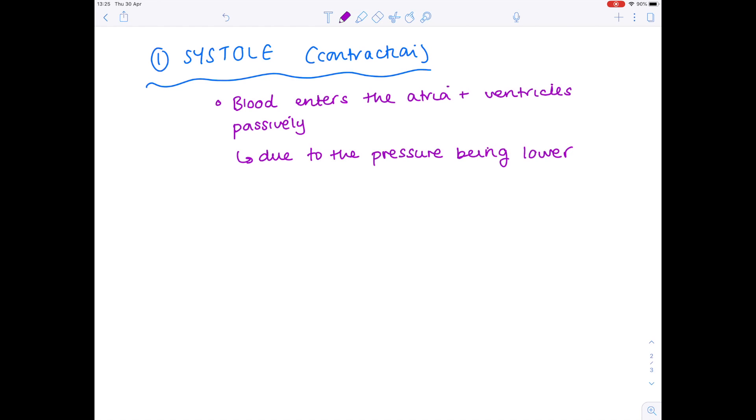Why is that? Due to the pressure being lower in both the atria and the ventricles. Now, when the ventricles are approximately 70% full of blood, the atria contract, blood flows from the atria into the ventricles.